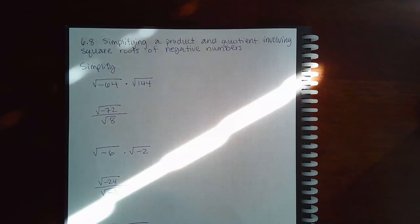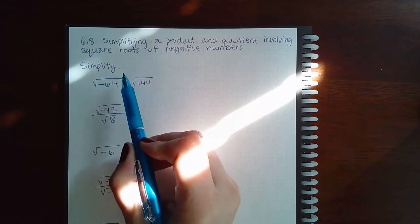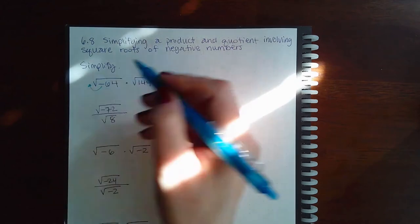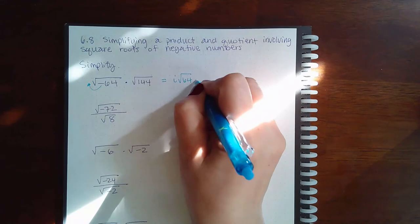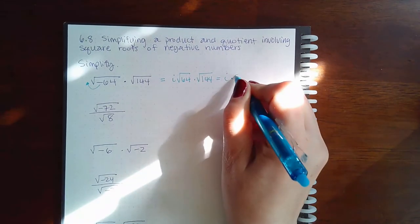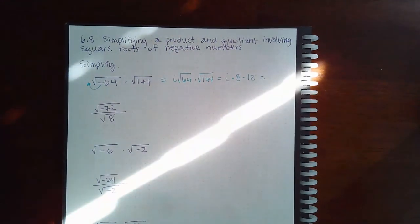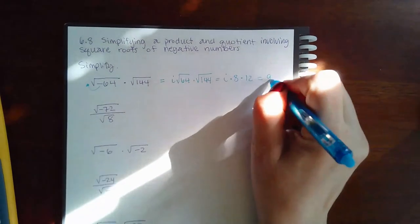Here we have 6.8: simplifying a product and quotient involving square roots of negative numbers. Remember from the last concept, if you have a square root of a negative, it's not a real number — it's an imaginary number. So that negative comes out as an i, giving us i times √64 times √144. The square root of 64 is 8 and the square root of 144 is 12, so this becomes 96i.